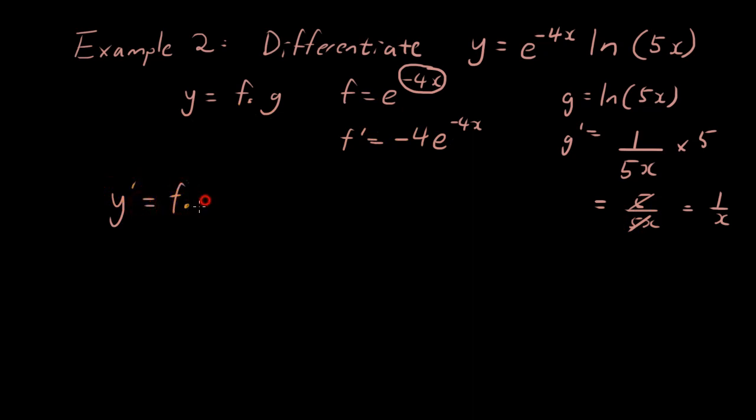So let's put everything inside the product rule formula, f times g dash plus g times f dash. So f is e to the power of negative 4 x, g dash is 1 over x, plus g is ln 5 x, and f dash is negative 4 times e negative 4 x. There's a lot of stuff there, but hopefully we can simplify it.